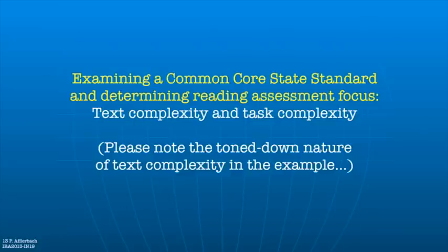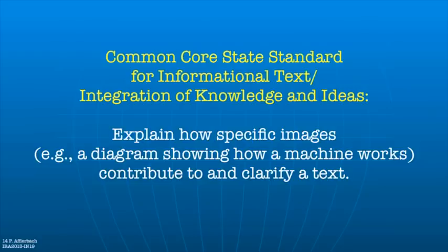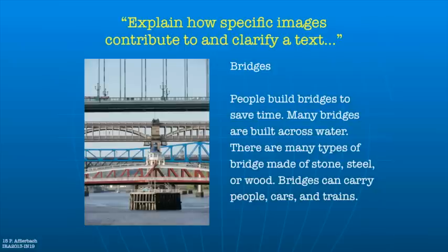I've lifted a Common Core state standard for reading informational text — I'm going to give you a text and a picture, because that's part of what the standard focuses on. I've really toned down the text complexity so we can focus on task complexity. The standard is: explain how specific images — a diagram showing how a machine works, for example — contribute to and clarify a text. That's under the category of informational text, integration of knowledge and ideas. The text I wrote uses the Tyne River in Newcastle, UK — if you drink Newcastle Brown Ale, you can see one of those bridges on the label.